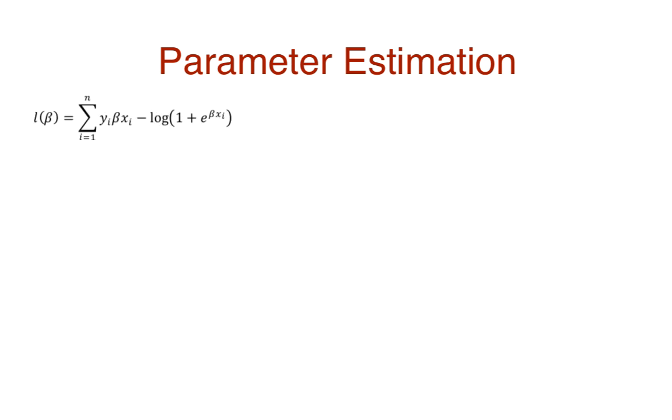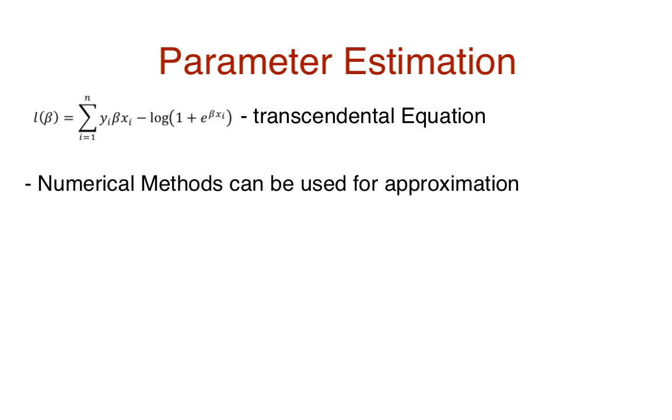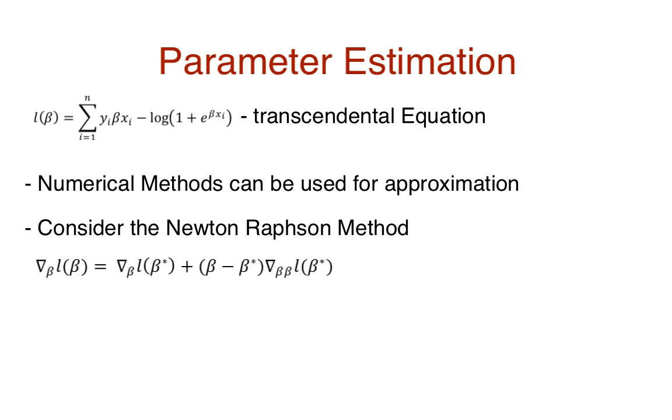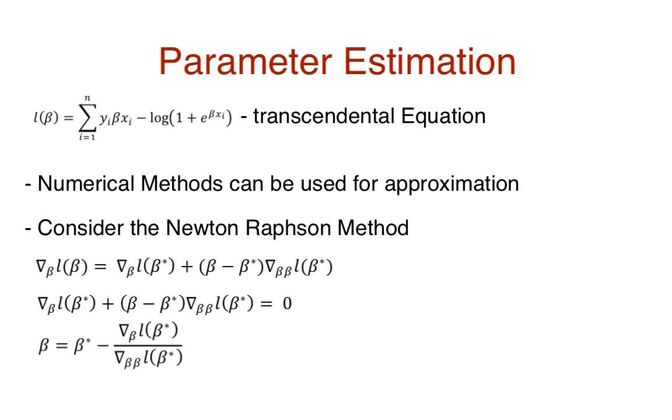This final likelihood equation consists of non-algebraic terms like logarithms and exponents. Such equations are also called transcendental equations and cannot be computed exactly. However, we could use numerical methods to approximate a solution. So for now, we can consider the Newton-Raphson approach. This involves the first two terms of the Taylor series expansion. We need to compute this for t iterations, then beta will eventually converge to the approximate coefficient vector.